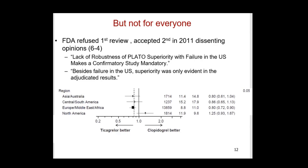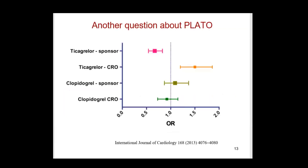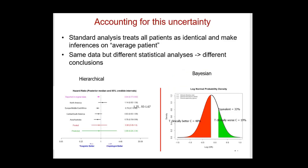There was another concern: when the investigators did the adjudication, there was no overall effect for ticagrelor. It was only after the sponsor did adjudications that it became significant. This is shown where regions are divided according to whether the study was adjudicated by the sponsor or by a CRO — it was only in the areas adjudicated by the sponsor that we had significant benefit for ticagrelor. This could just be the play of chance, but all that to say there is still some uncertainty even with a small p-value.